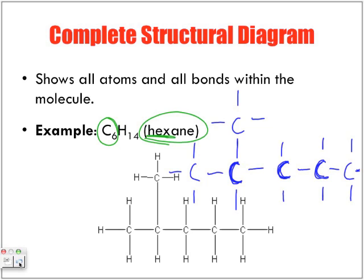I can simplify my complete structural diagram without including the hydrogens. Instead of writing them, I show straight lines in their place. Please be clean with the diagrams — the last thing you want is a line that may look like a double bond, which will make one of these questions incorrect.